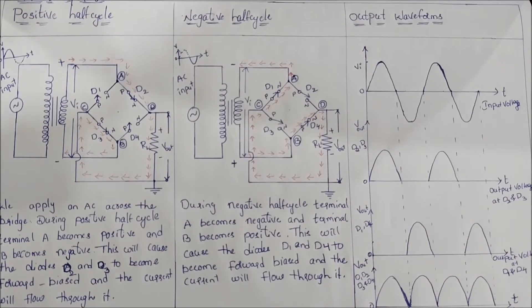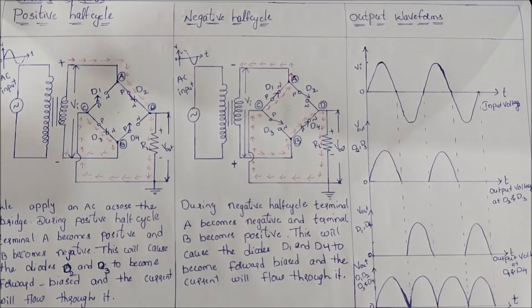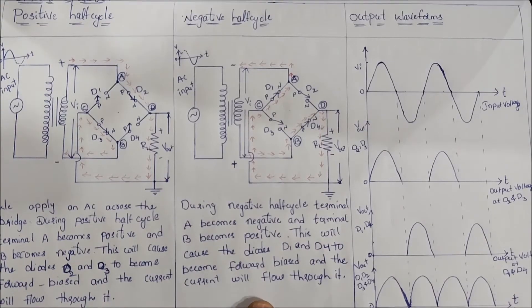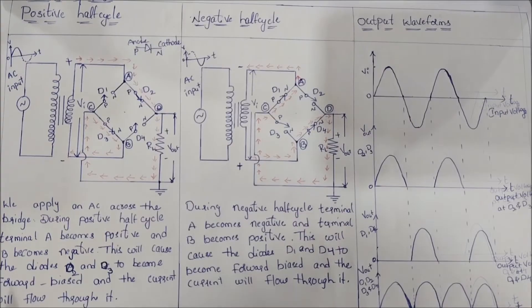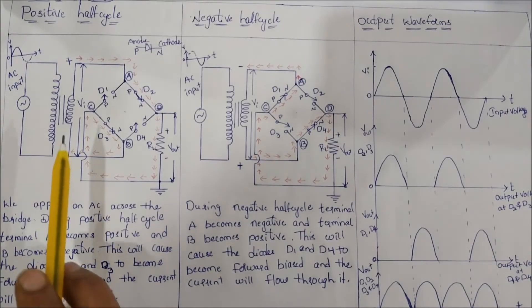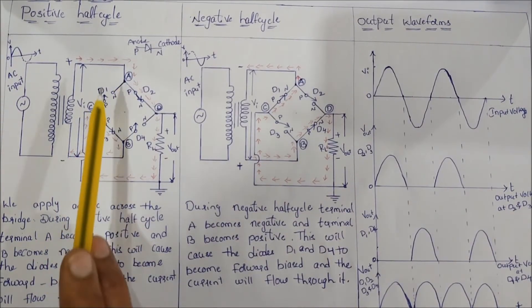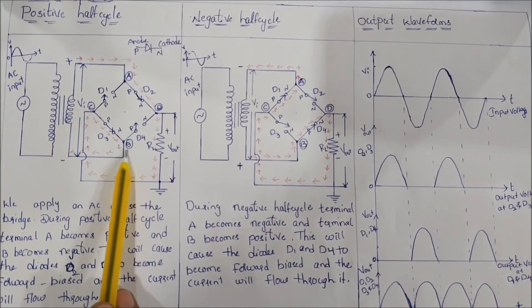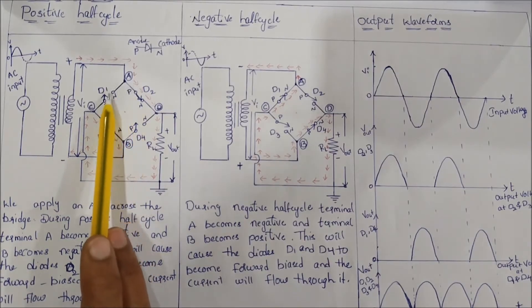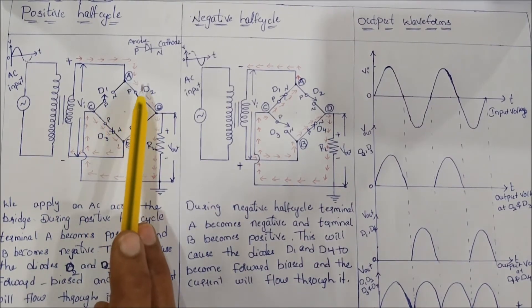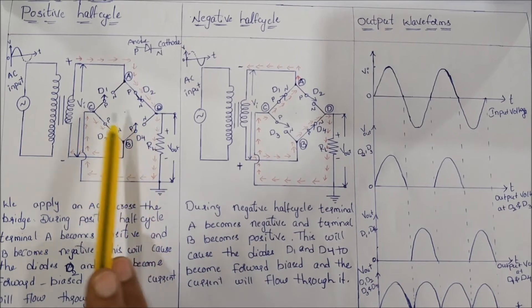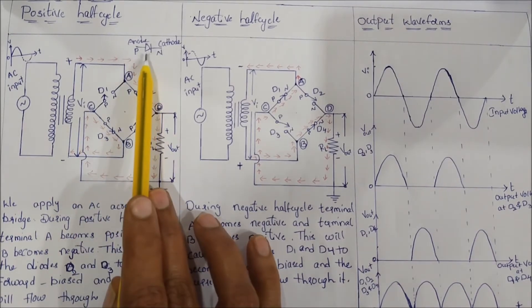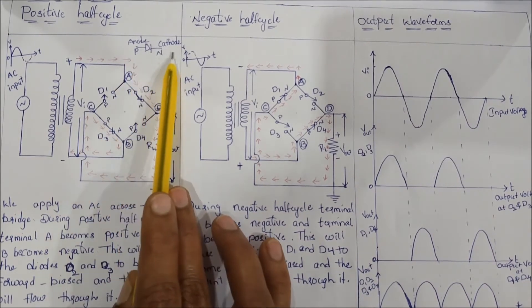Now we have to do the circuit operation during the positive half cycle, during the negative half cycle, and the output waveforms, step by step. During the positive half cycle, terminal A is positive and terminal B is negative. I am using switches to represent the diodes, showing anode and cathode.